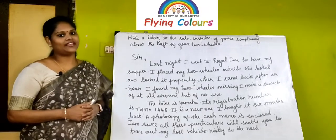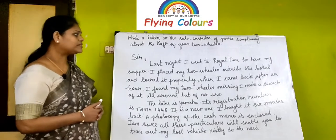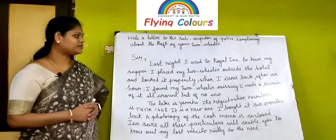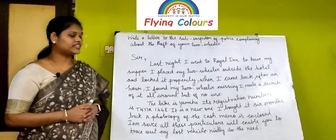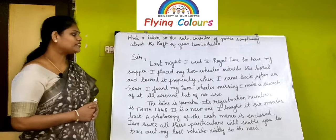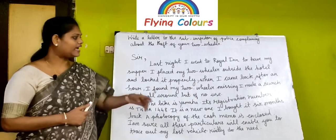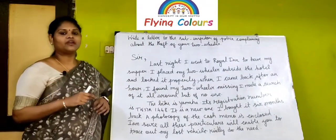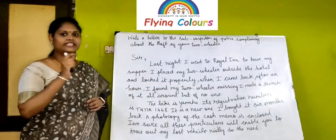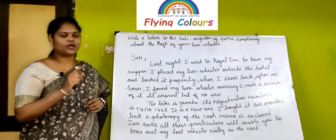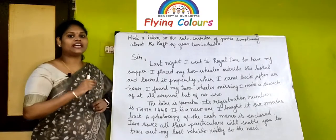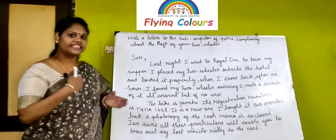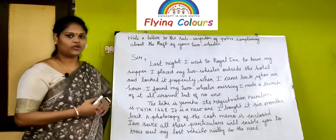Let me read the letter for you. 'Last night I went to Royal Inn to have my supper. I placed my two-wheeler outside the hotel and locked it properly. When I came back after an hour, I found my two-wheeler missing.' Note: after a full stop, write capital 'I' to start the next sentence. After sentence completion, put a full stop and start the next sentence with a capital letter.